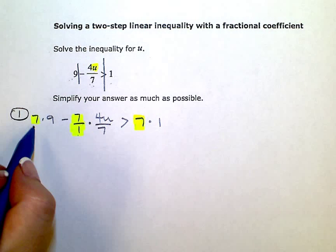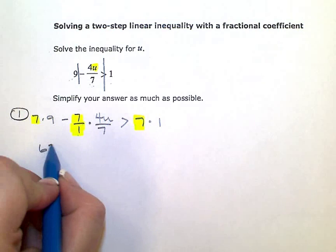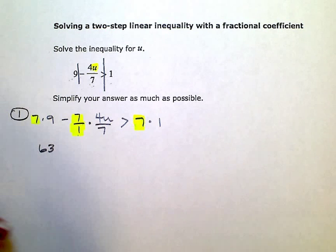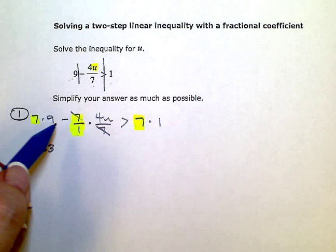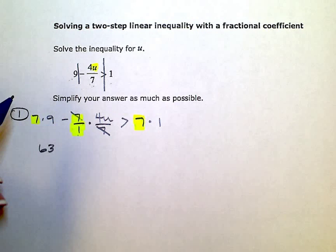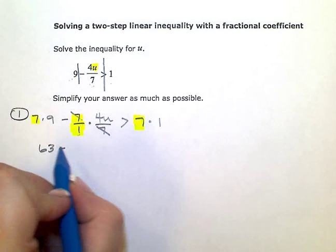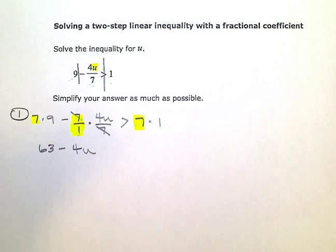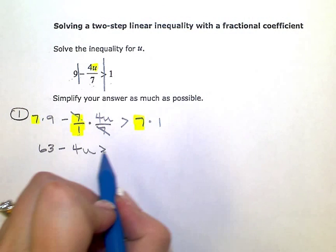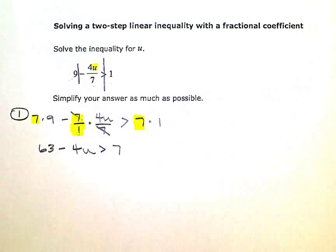Seven times nine, I'm just going to simplify. Seven times nine is 63. Over here my sevens will cancel, which was the whole point of doing this. I'm left with just four u over one. So I need to subtract just four u. I don't need the over one. I can leave that off. Is greater than seven times one is seven. Now my fraction is gone. I can just proceed with solving.